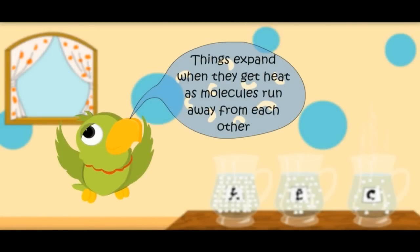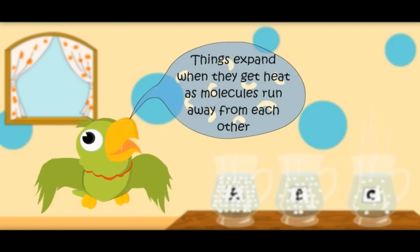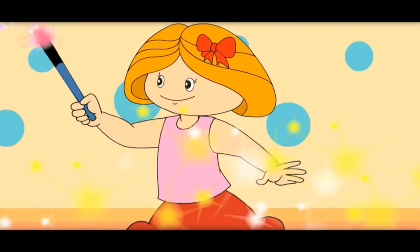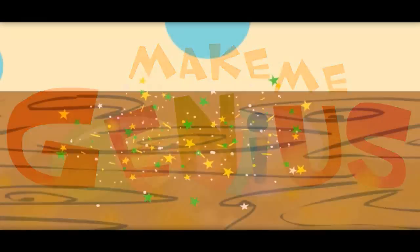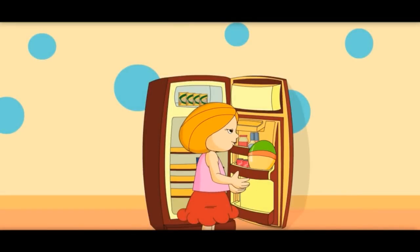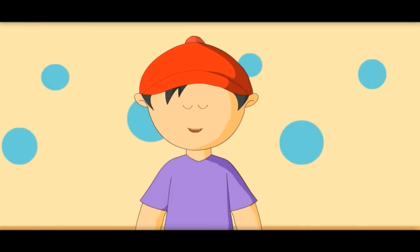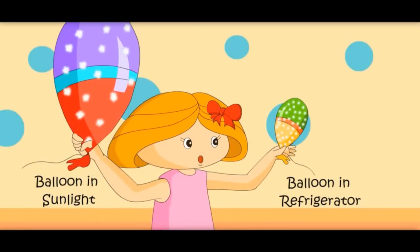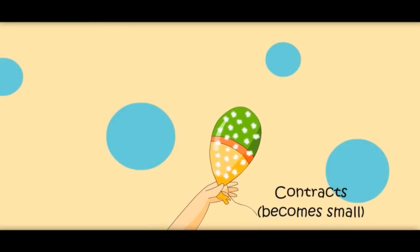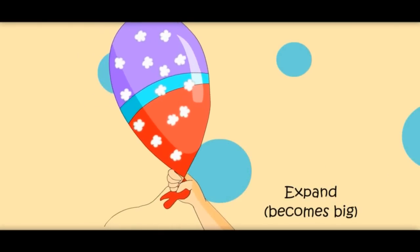Things expand when they get heat, as molecules run away from each other. We can see this with an experiment. Here are two balloons — I am keeping one in the refrigerator and one in sunlight. The balloon in sunlight would become bigger, and the balloon in the refrigerator would contract and become small. This means things contract in cold and expand in heat.